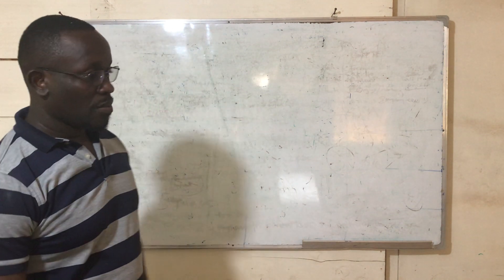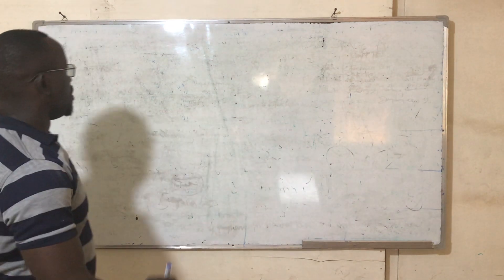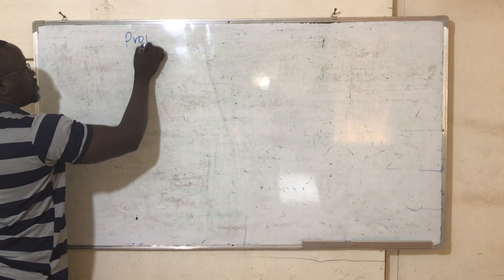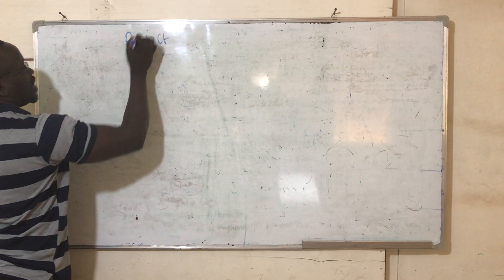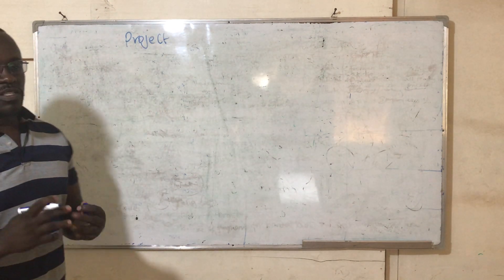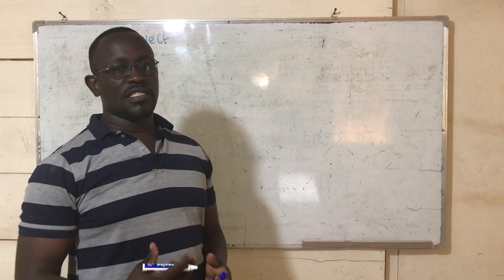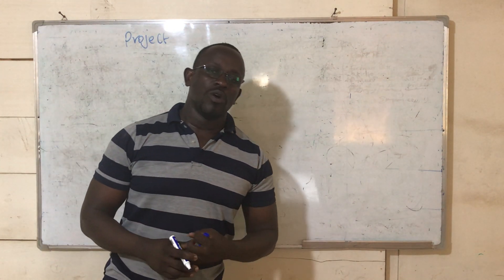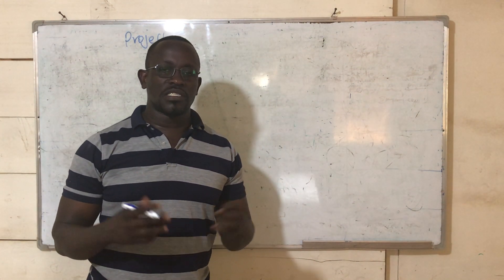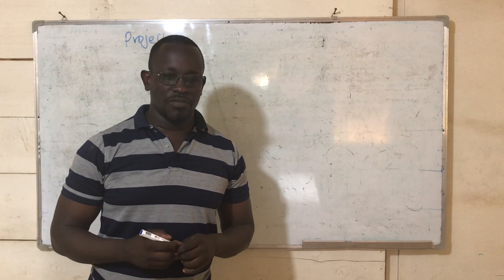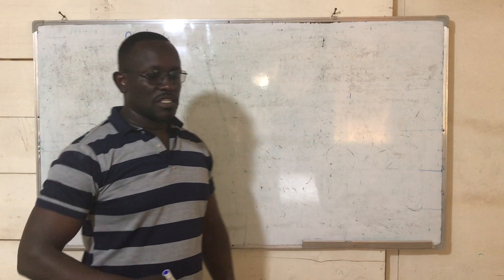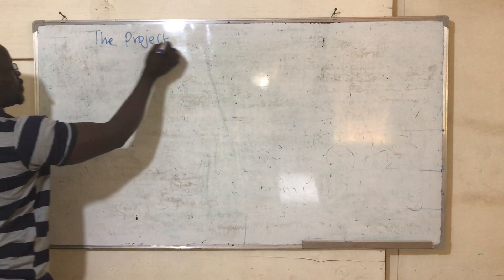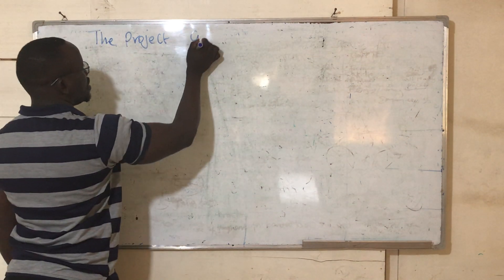Allow me to talk about today's topic. The first topic we previously looked at was a project — we looked at it in detail, including its characteristics, features, forms, types, and some of the reasons why projects fail. Today, I want us to look at the second topic, which we call the project cycle.